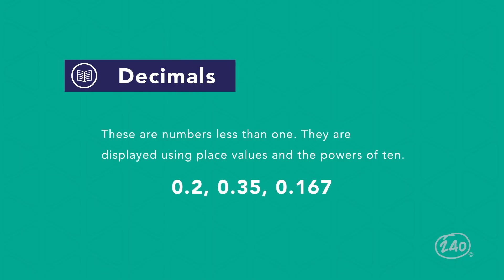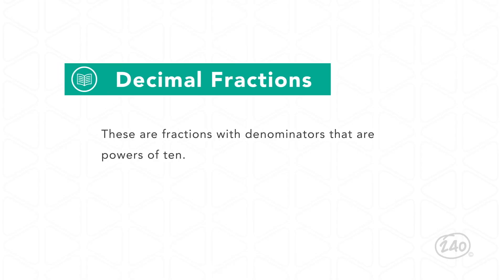Decimals are numbers less than one. They are displayed using place values and the powers of ten. Usually, we first learn about decimal fractions, which are fractions with denominators that are powers of ten. For example, one tenth is the same thing as zero point one.